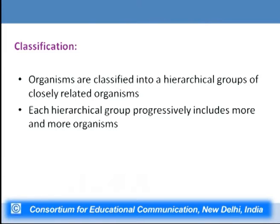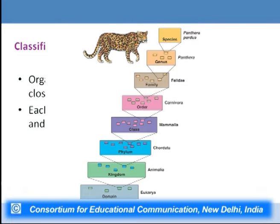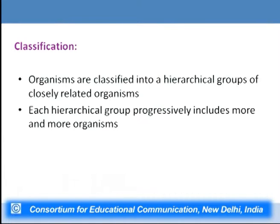Species is the lowest group of animals which can be used for hierarchical classification. All organisms are classified into hierarchical groups of closely related organisms — similar organisms are grouped together. Species forms genus, and genus forms family, and so on. Each hierarchical group progressively includes more and more organisms. At the lowest level is a species, then species form genus, then we have genus, family, order, and so on.